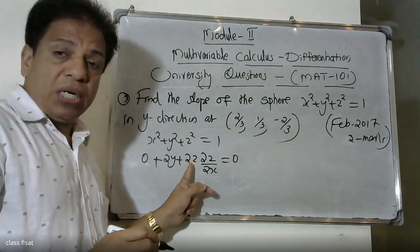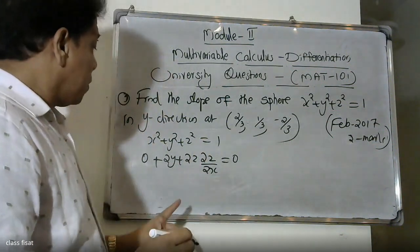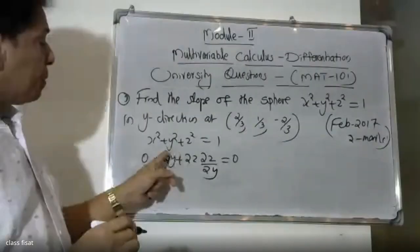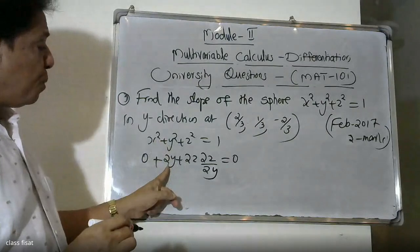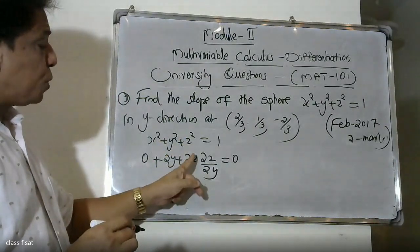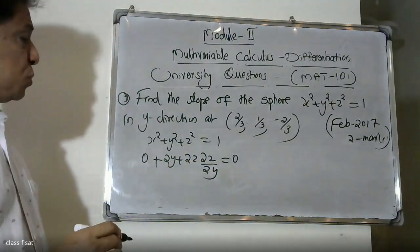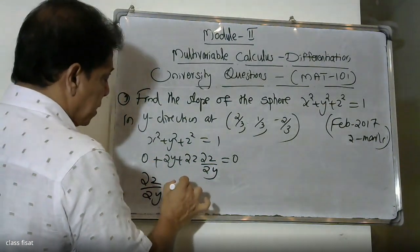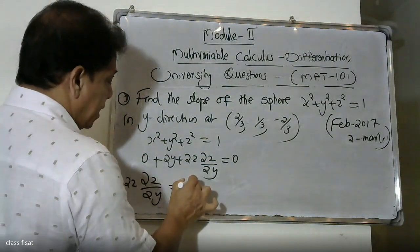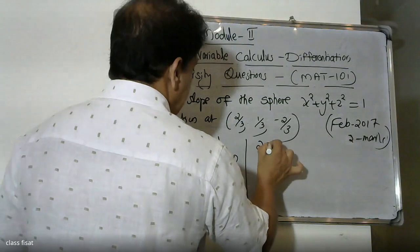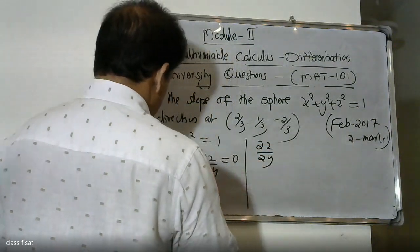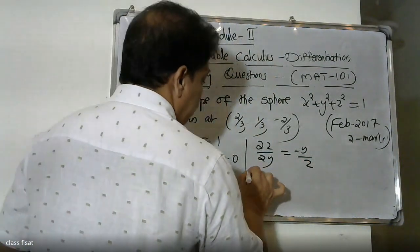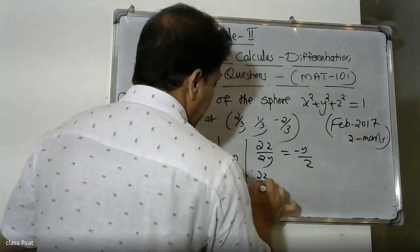Differentiating x-squared plus y-squared plus z-squared equals 1 with respect to y: x-squared gives 0 (x is constant), y-squared gives 2y, and z-squared gives 2z times dou z by dou y, all equal to 0. Therefore 2z times dou z by dou y equals minus 2y, giving dou z by dou y equals minus y divided by z.